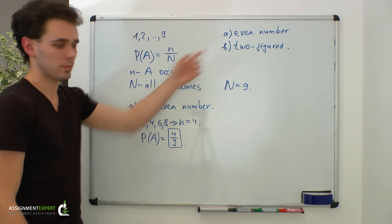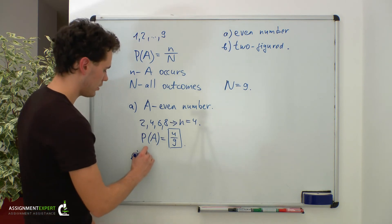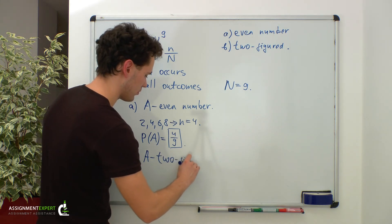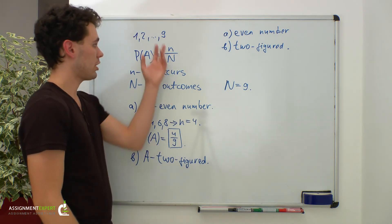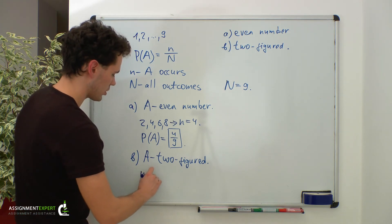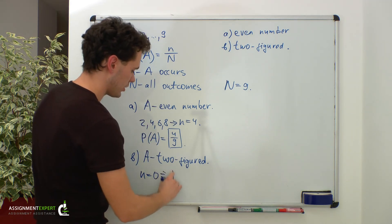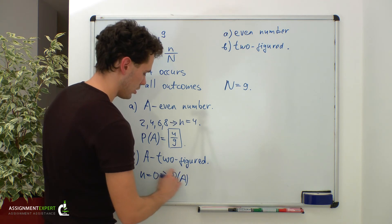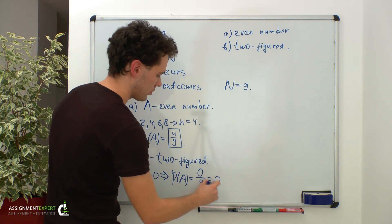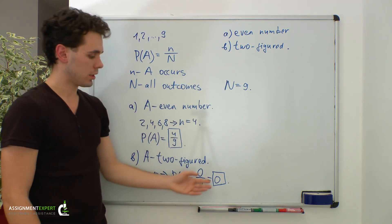Now let's have a look at case B. In case B, the event of interest is getting a two-digit card. As we said, we have numbers from 1 to 9, and none of them is two-digit. Therefore, n equals 0. Using the probability formula, the probability of event A equals 0 over 9, which gives us 0. So the probability of getting a two-digit card equals 0.